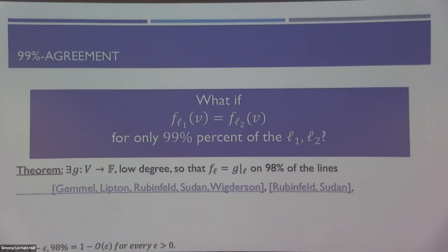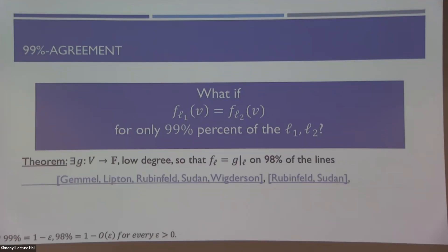Something has to vary here, right? So what varies? I'm not giving this formally. I'm just doing this example. But if one minus epsilon percent of the pairs of lines are consistent, then one minus some constant times epsilon percent of the lines agree with some low degree function. There's a precise way to state it. Let's ignore this for now.